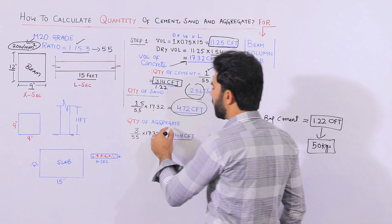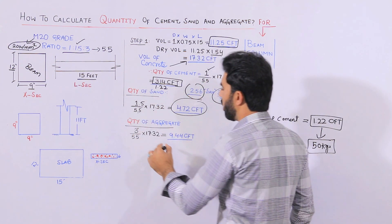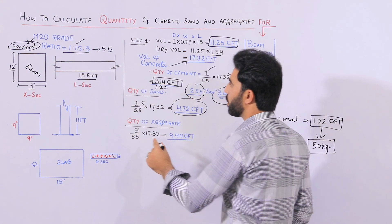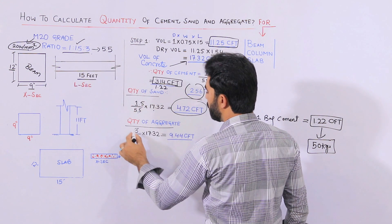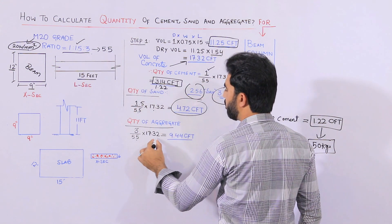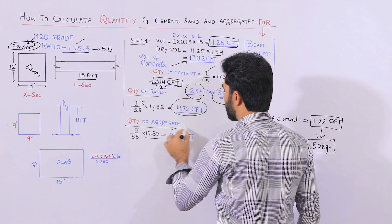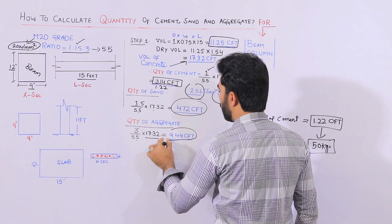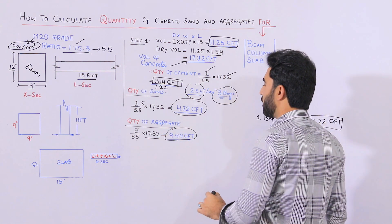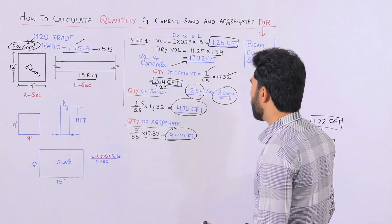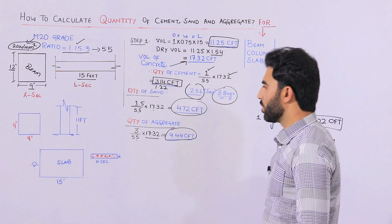Now let me find the quantity of aggregate. 3 parts are aggregate, so 3 divided by the sum of ratio 5.5, multiplied by the dry volume of 17.32. The volume of aggregate required is 9.44 cubic feet.